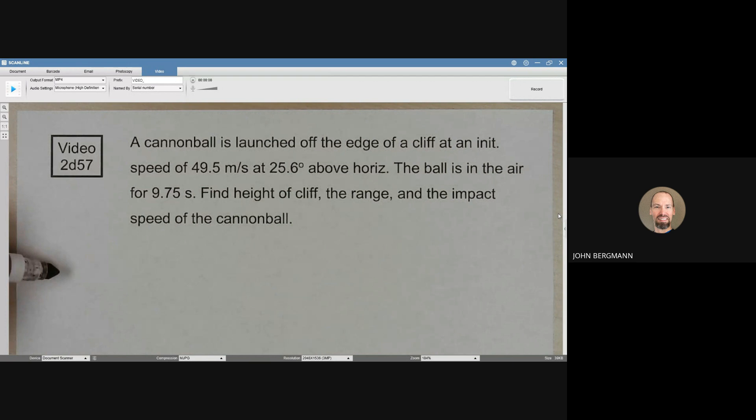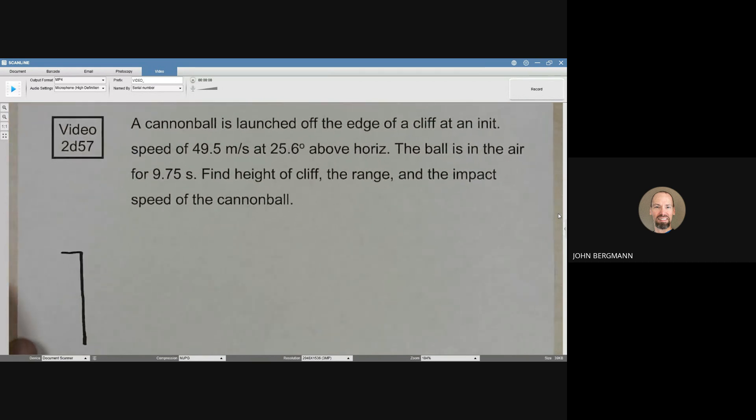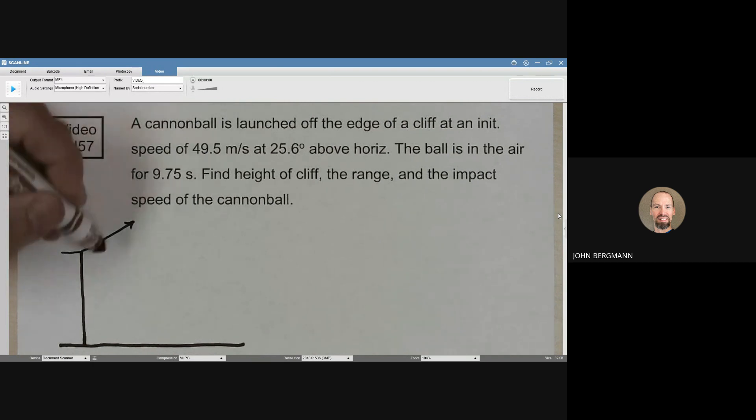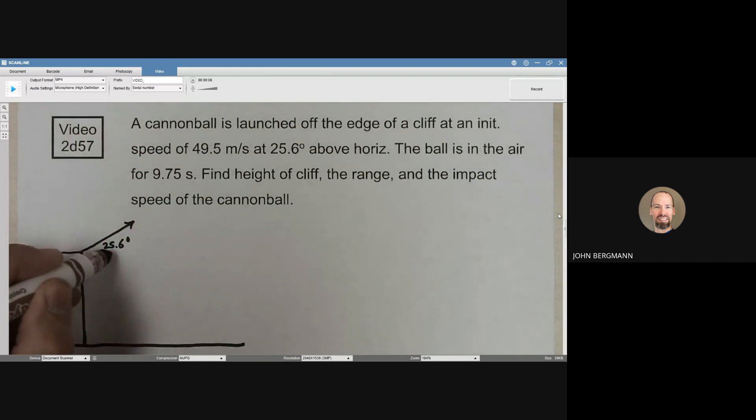Sometimes it's nice to just draw a picture so we can get an idea of what's happening here. So here we have a cliff and we're launching the cannonball at an angle of 25.6 degrees above the horizontal, and the initial speed is 49.5 meters per second.